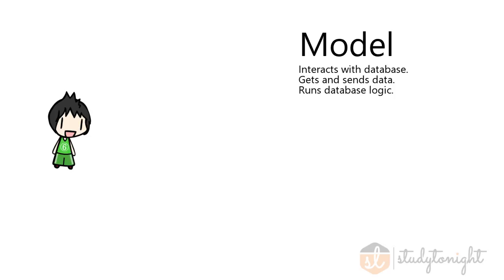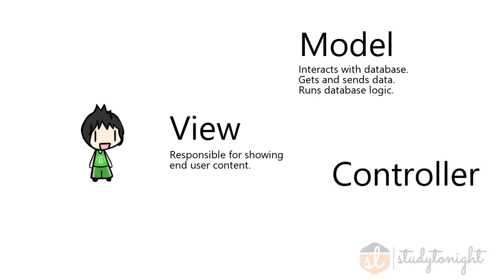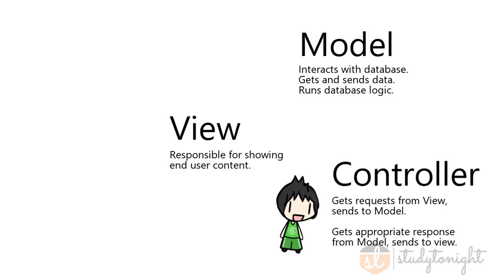To explain MVC in short terms: the Model is the component that interacts with the database and runs logic commands on it. The View is the component that deploys the content that the end user sees. And the Controller acts as the middleman, receiving and sending requests, getting and setting data.